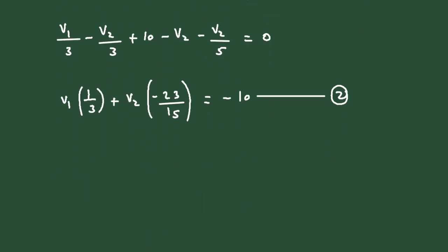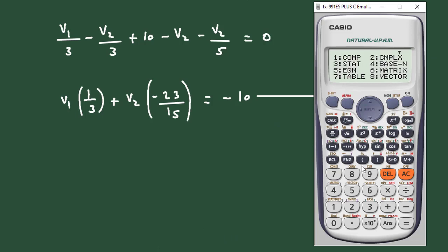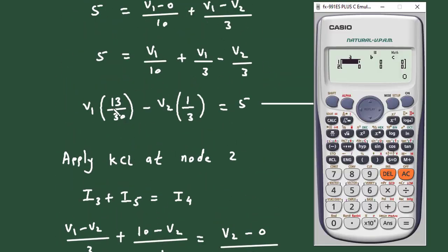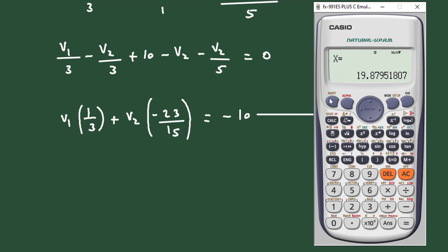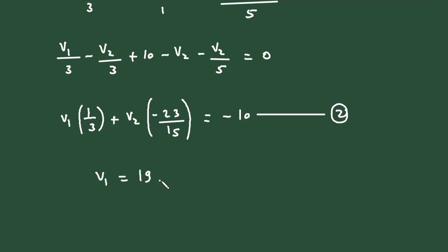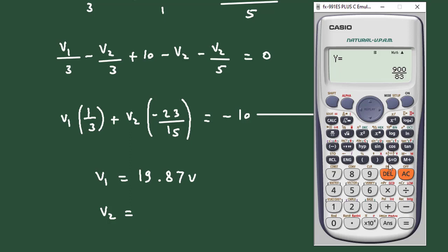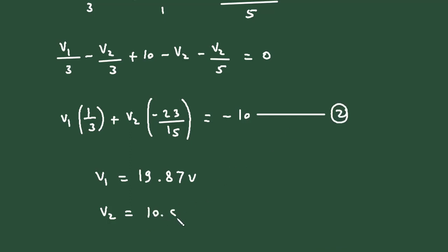Now we have equation number 1 and equation number 2, and there are two unknowns, so let us solve. Equation 1 gives coefficients 13/30 and minus 1/3 equal to 5. Equation 2 gives 1/3 and minus 23/15 equal to minus 10. Solving these simultaneously: V1 equals 19.87 volts and V2 equals 10.84 volts.